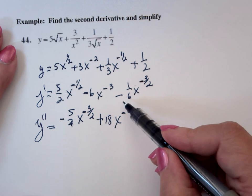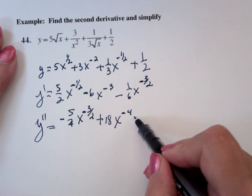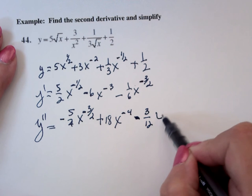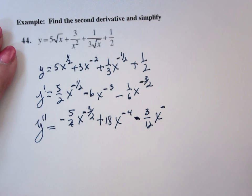-3/2 times -1/6 is -3/12, x to the -5/2.